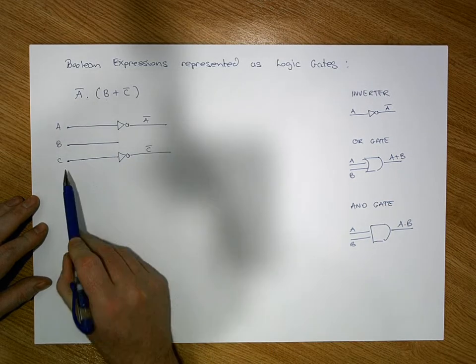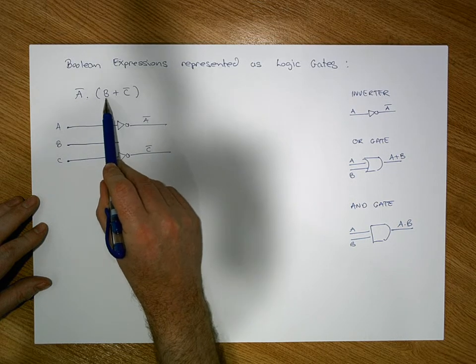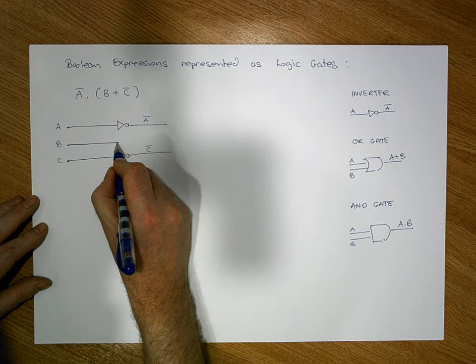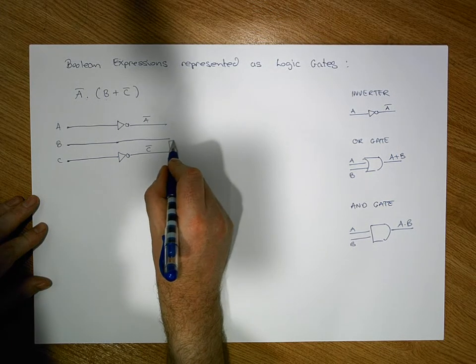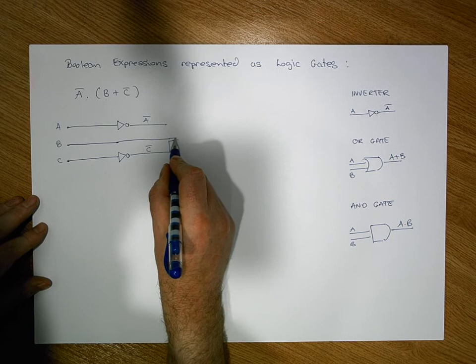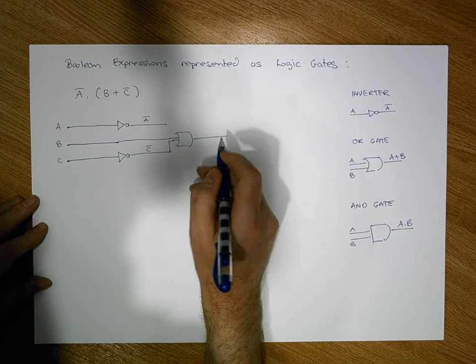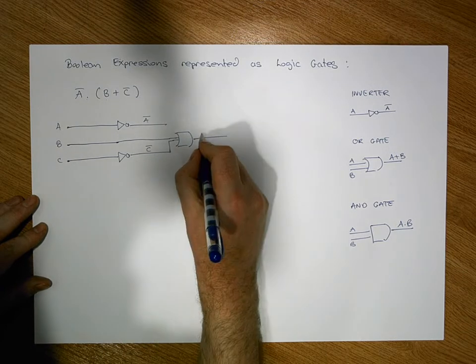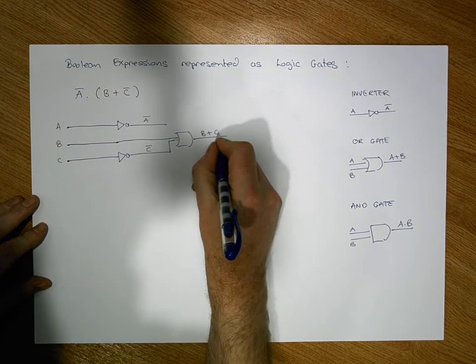Now that we have our C bar output, we can pass that into an OR along with the B input. We take the B over a little bit further along with the C bar, and we're going to pass that into an OR gate. What we get out here is we get the B signal OR'd with the C bar signal to give us B OR'd with C bar.